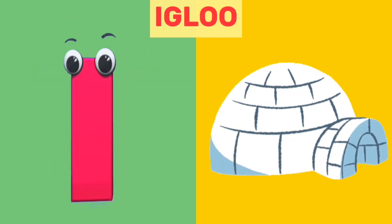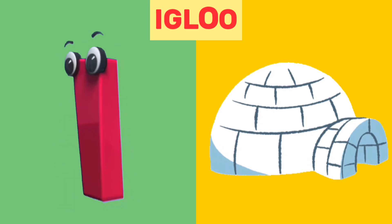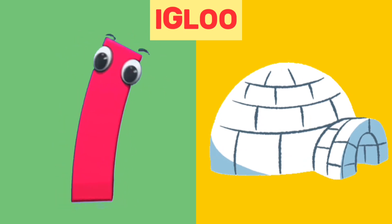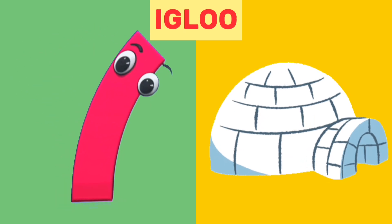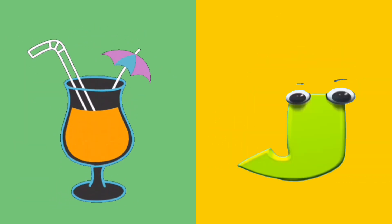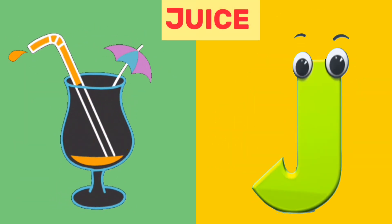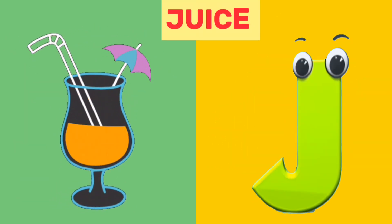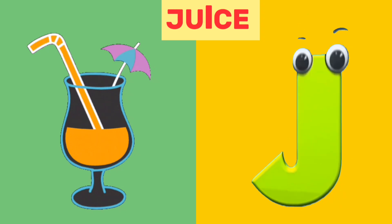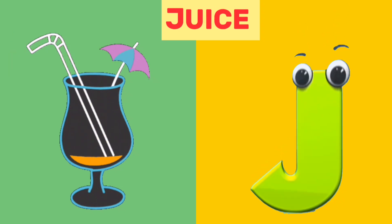I is for igloo. I, i, igloo. J is for juice. J, j, juice.